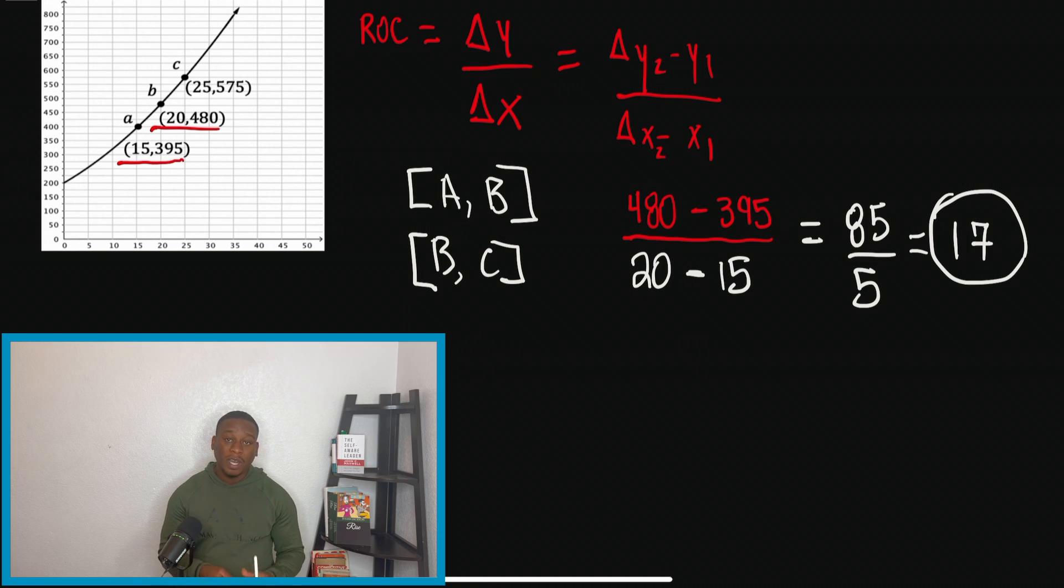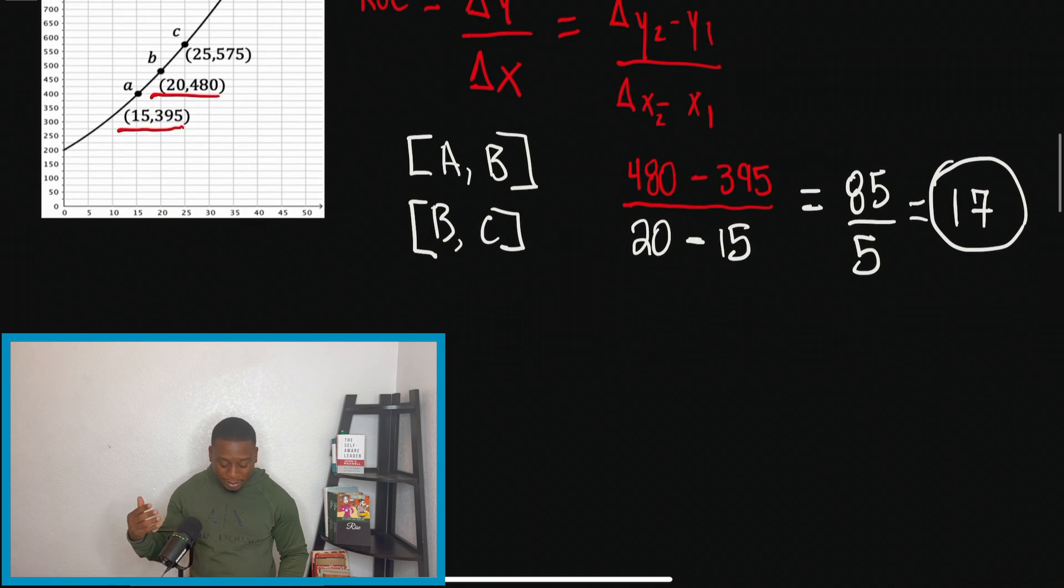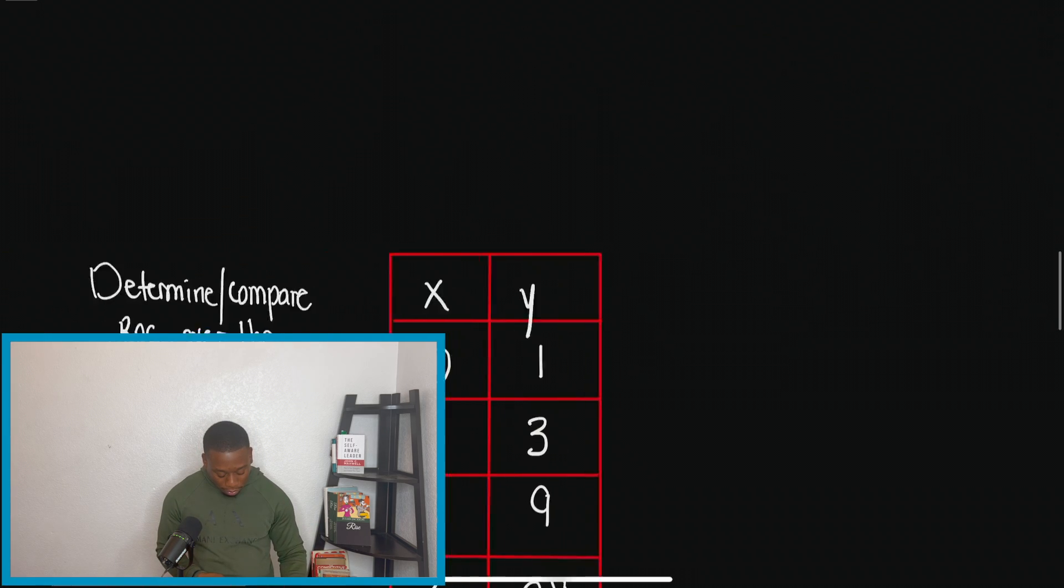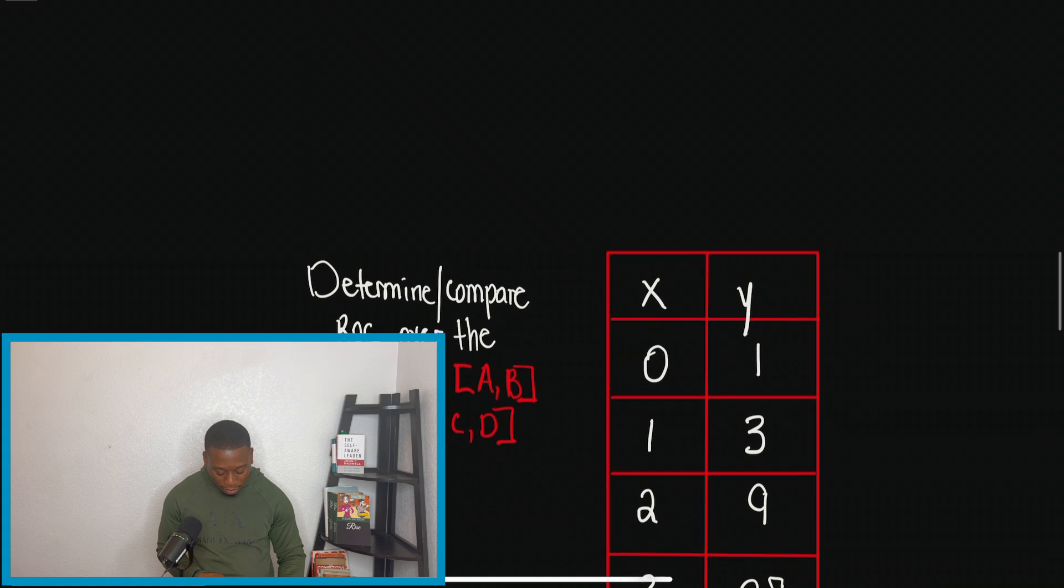So we're going to stop right there with this problem. We understand what the intervals are. So if I wanted to do the interval for BC, I would just use points C and B only. But what I want to do before we finish this video is I want to look at a differing example and explain it for a table. We looked at a graph. Now let's look at a table and see if we could do the same thing.